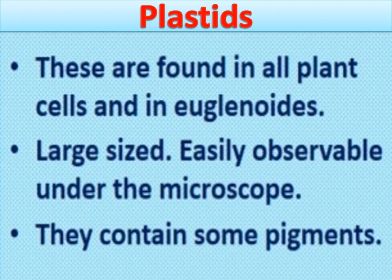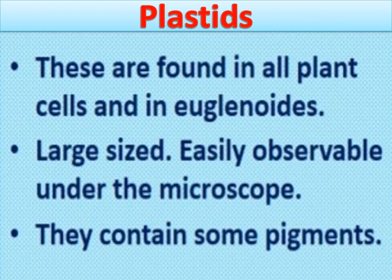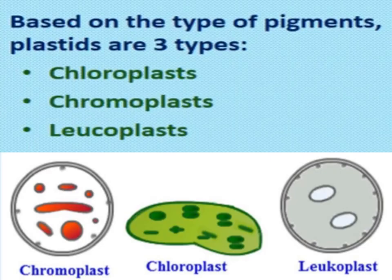Let's start with plastids. These are found in all plant cells and in euglenoids. In euglenoids these are large in size and easily observable under a microscope. They contain pigments, and based on the type of these pigments, plastids are of three types: chloroplast, chromoplast, and leukoplast.